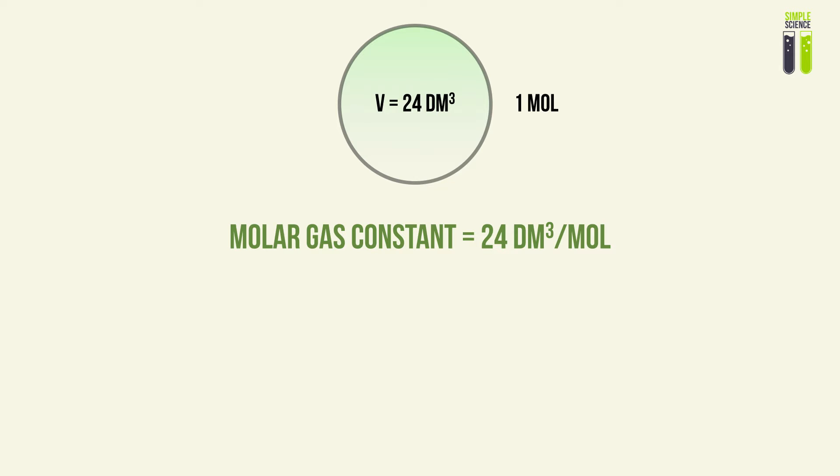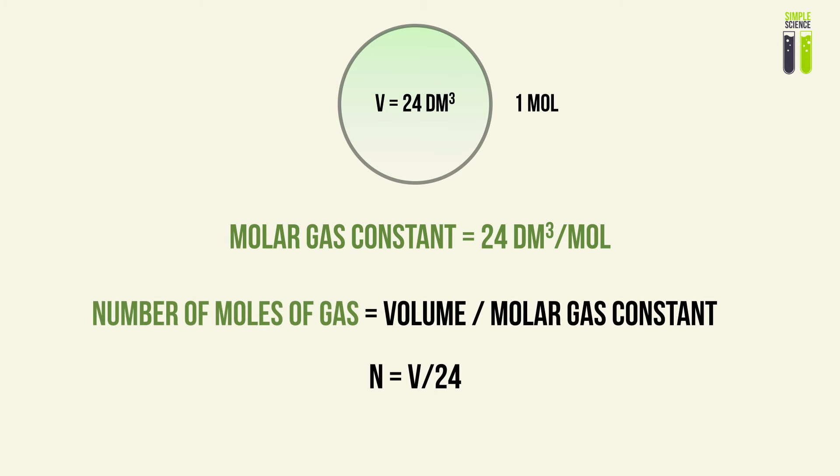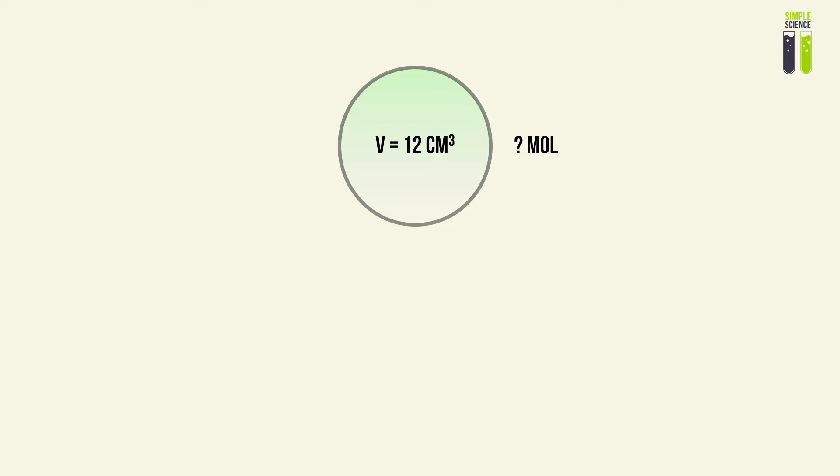Just like how we can calculate the number of moles using mass, we can calculate the number of moles of a gas by dividing the volume by the molar gas constant. If you're going to use the molar gas constant of 24 dm³ per mole, the volume you use must be converted to decimeters cubed before dividing.